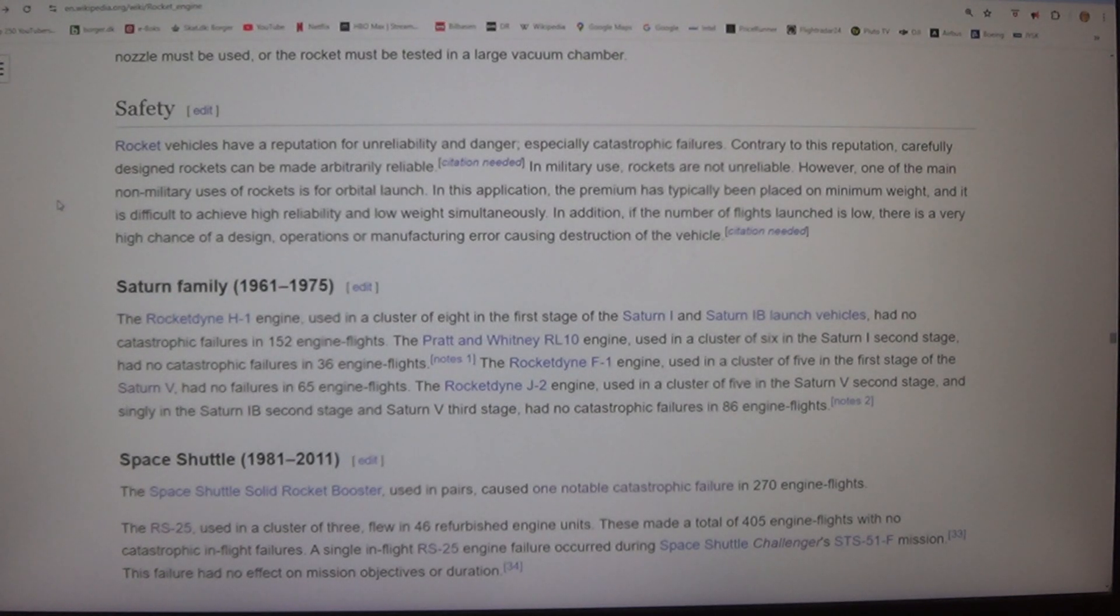The Rocketdyne H-1 engine, used in a cluster of eight in the first stage of the Saturn I and Saturn IB launch vehicles, had no catastrophic failures in 152 engine flights. The Rocketdyne J-2 engine, used in a cluster of five in the Saturn V second stage, and singly in the Saturn IB second stage and Saturn V third stage, had no catastrophic failures in 86 engine flights.